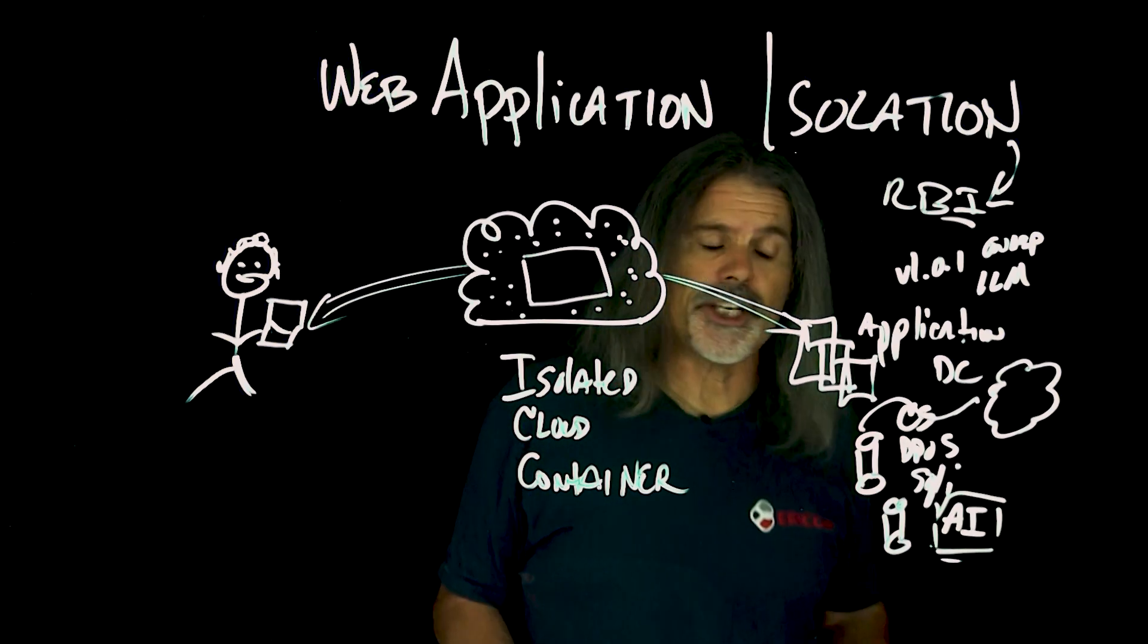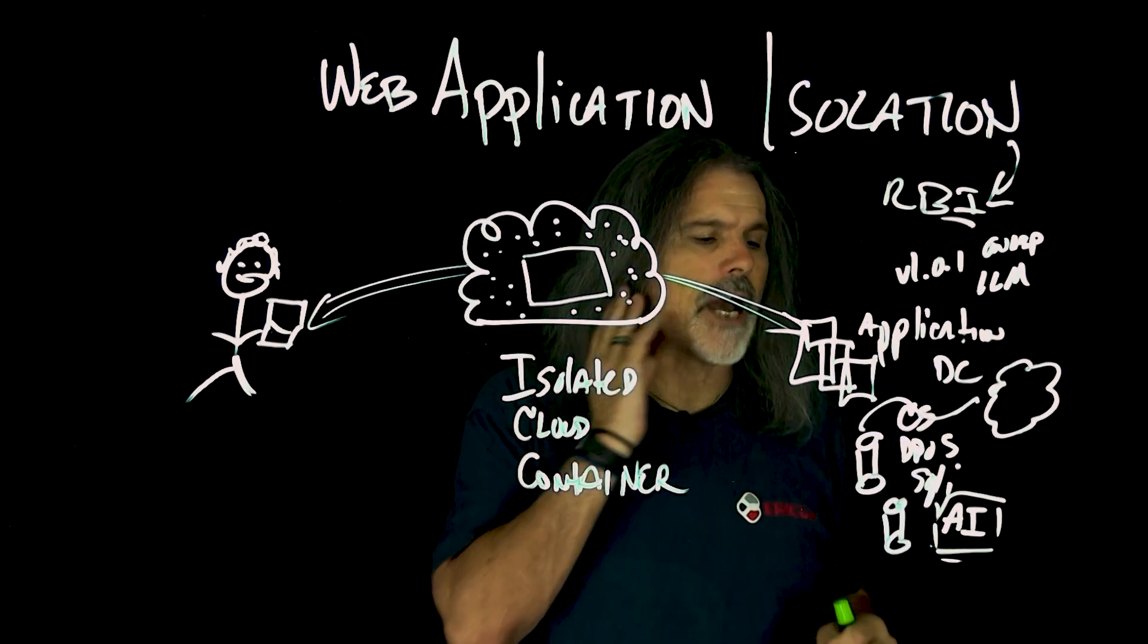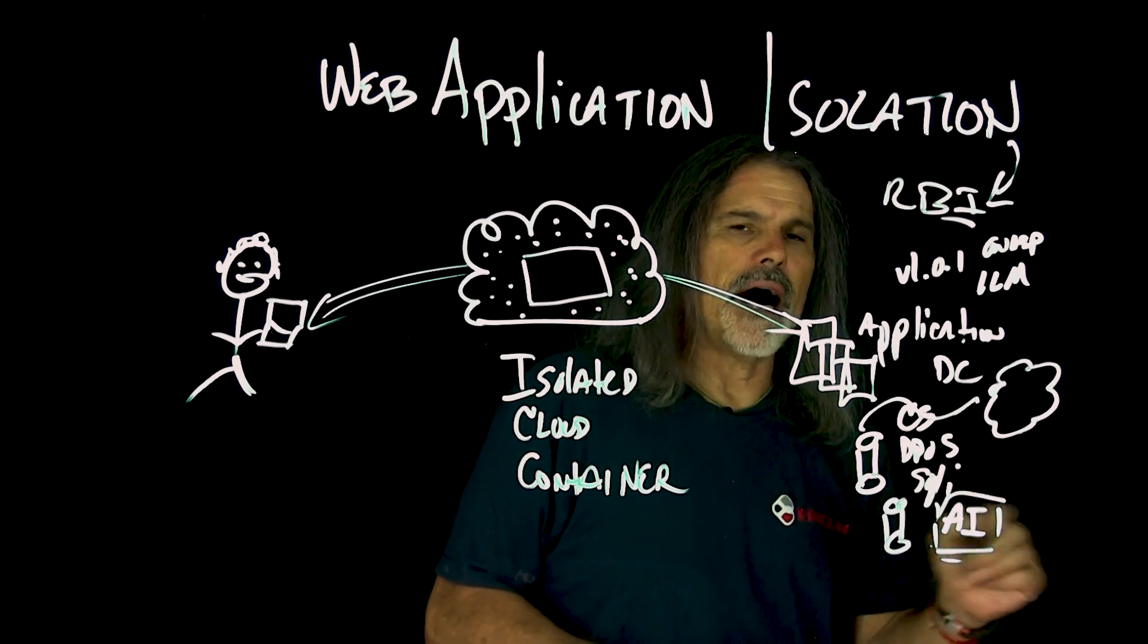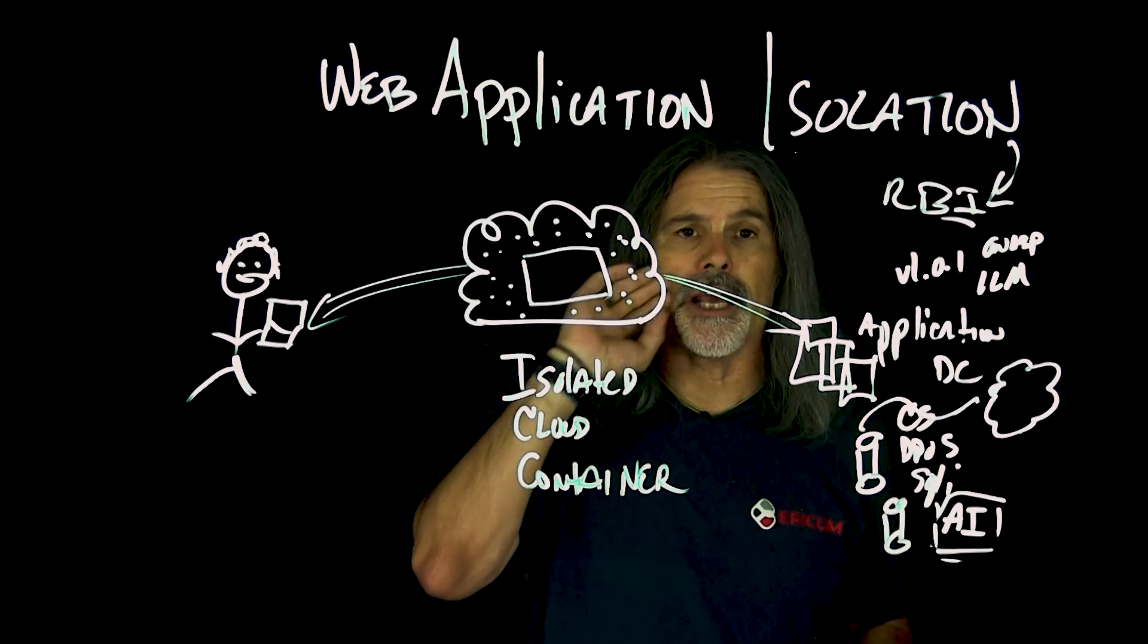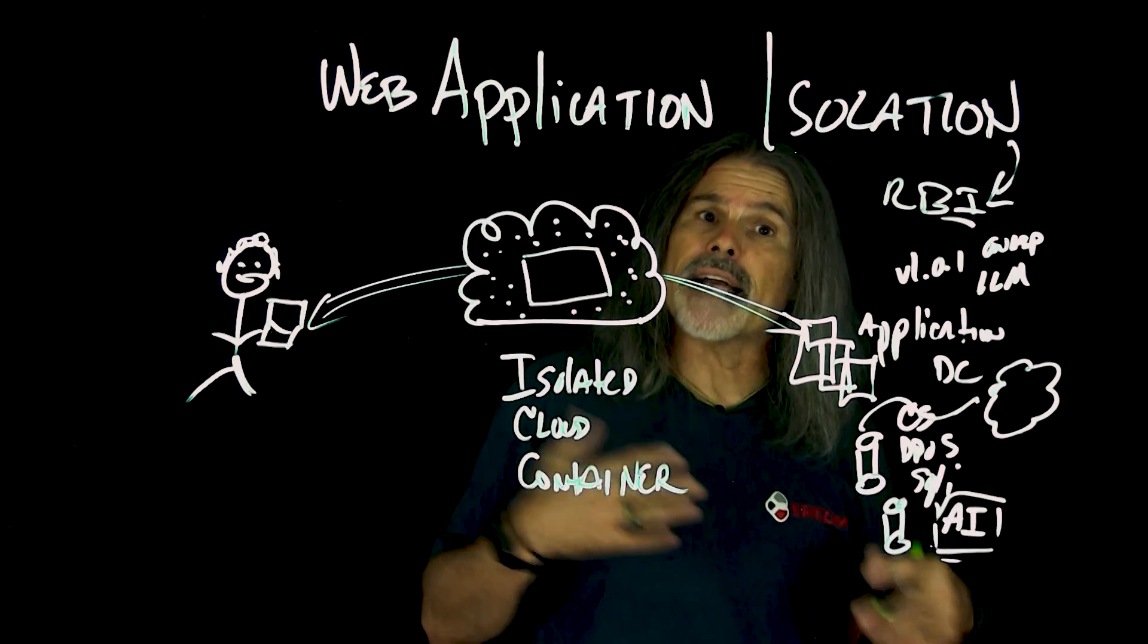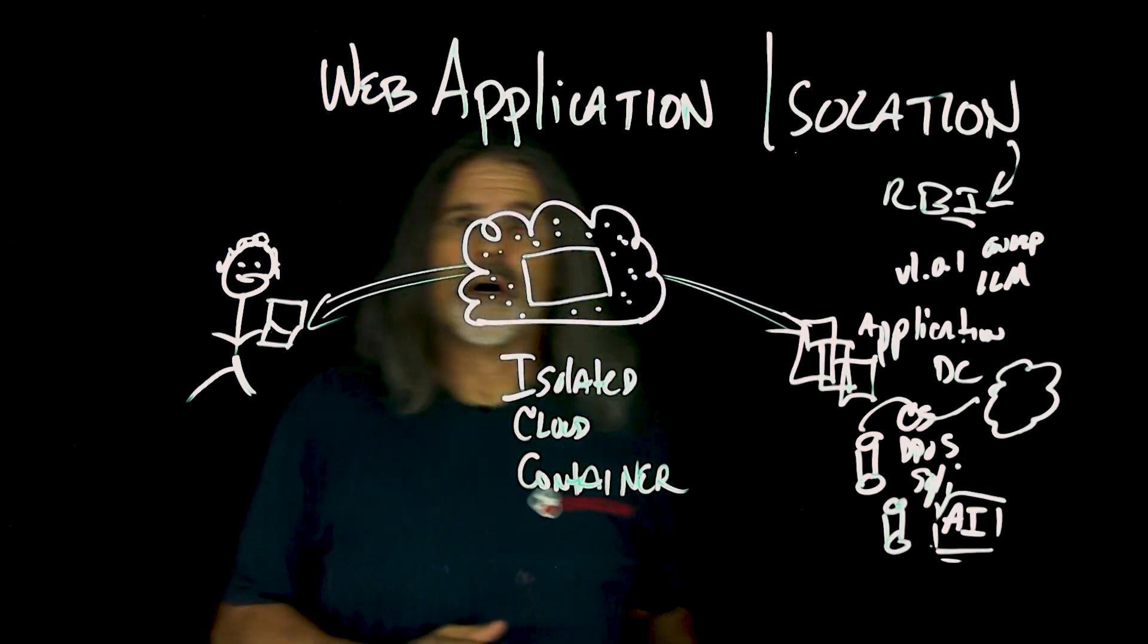OWASP came out with their early version of the top 10 for generative AI sites. There are things like injection and other such types of attacks that you can hit this model on the back end to impact the application. And certainly, isolating the application can help protect against some of those also.